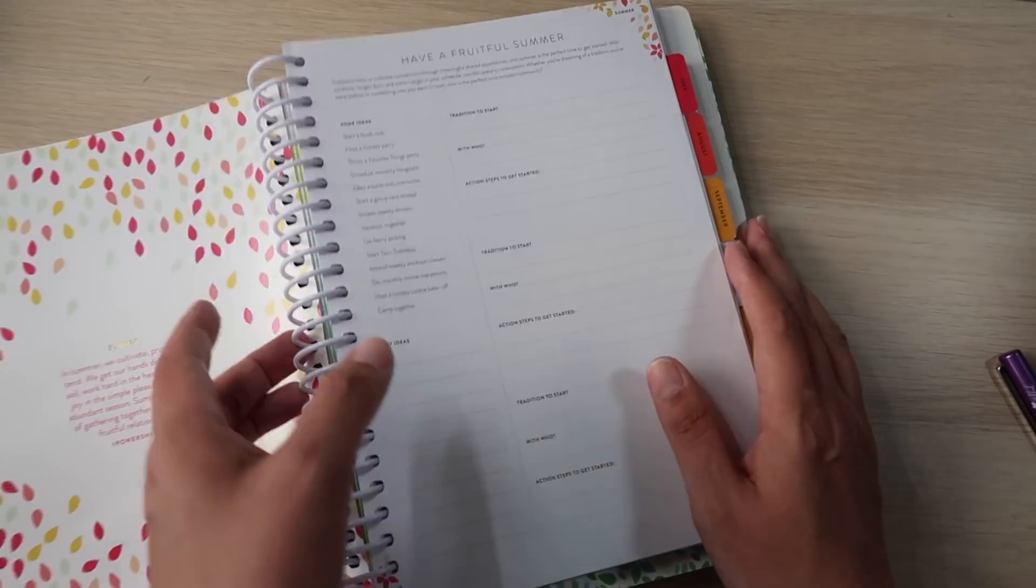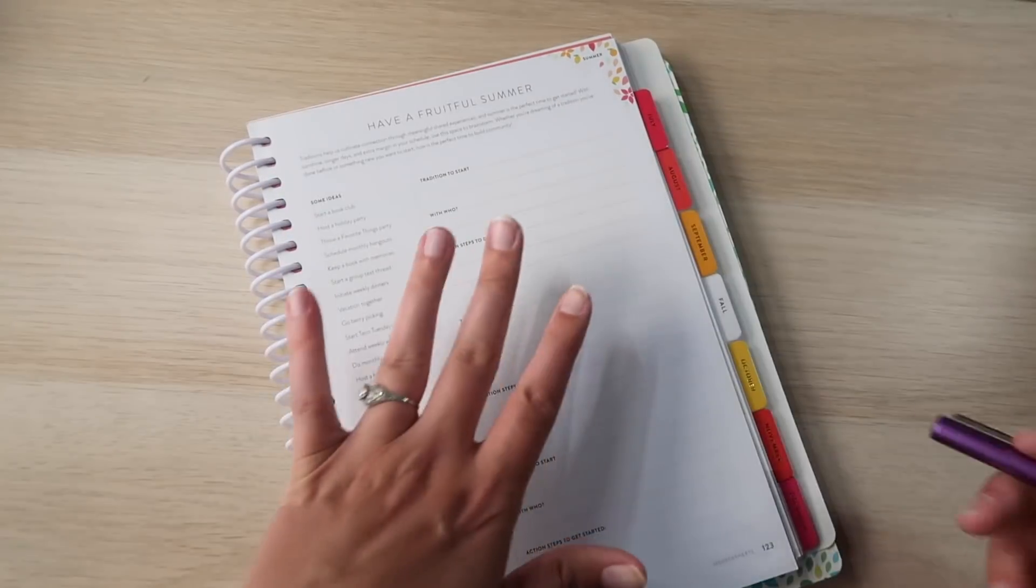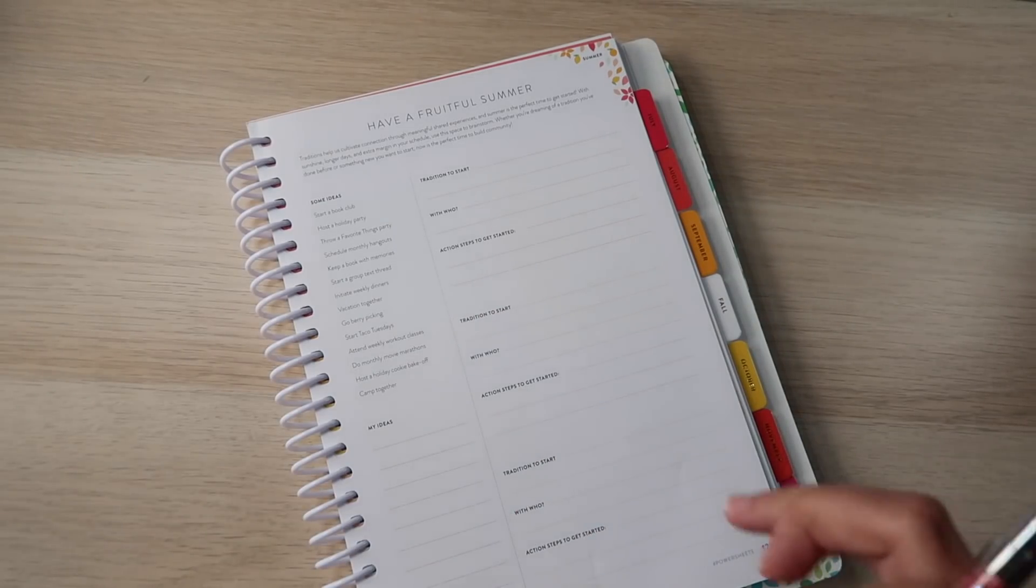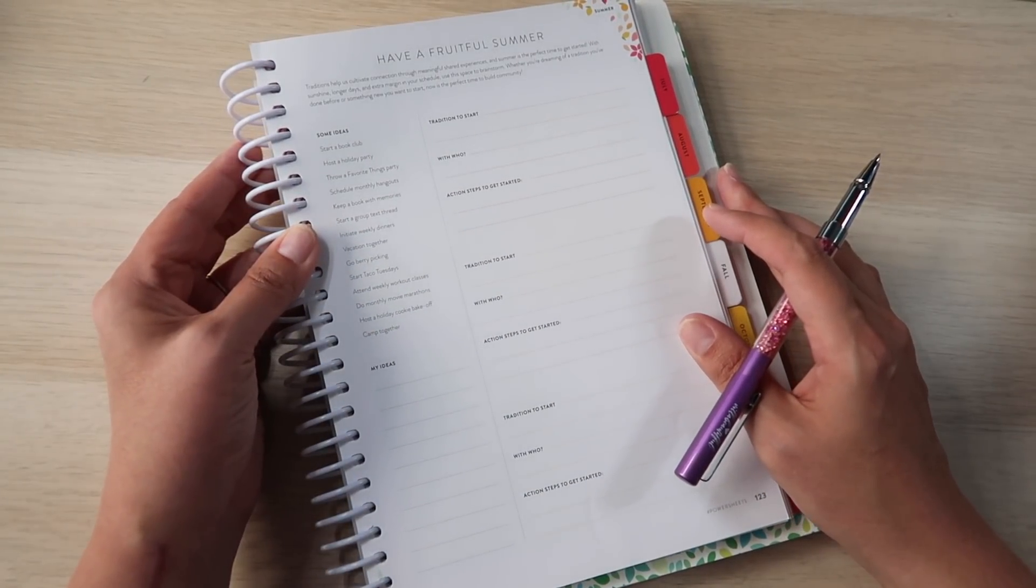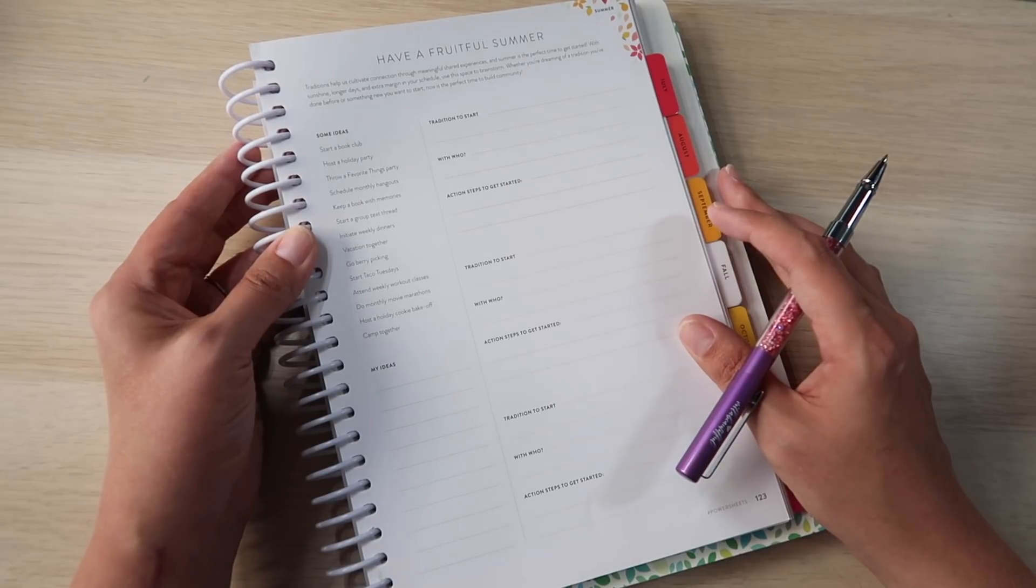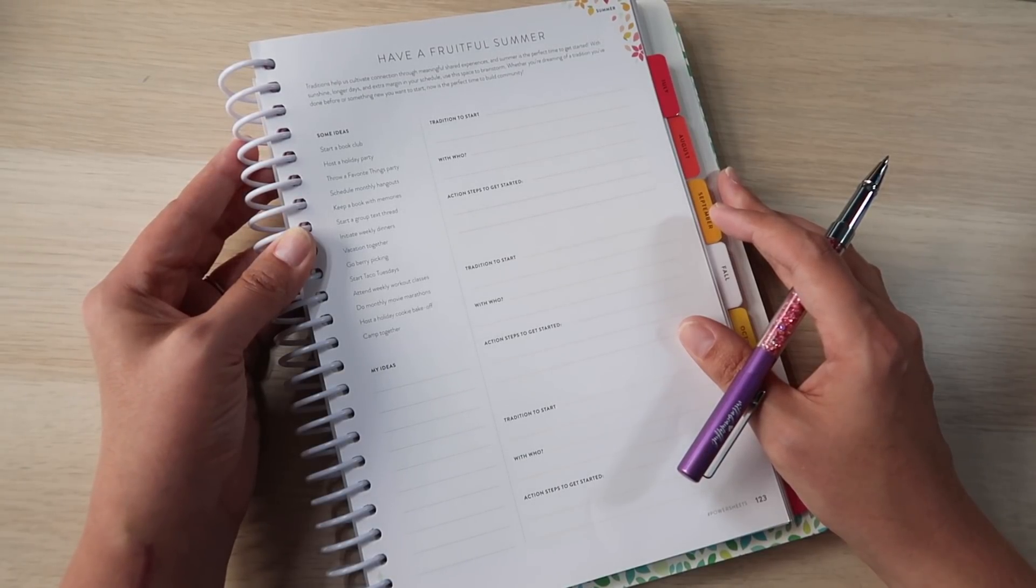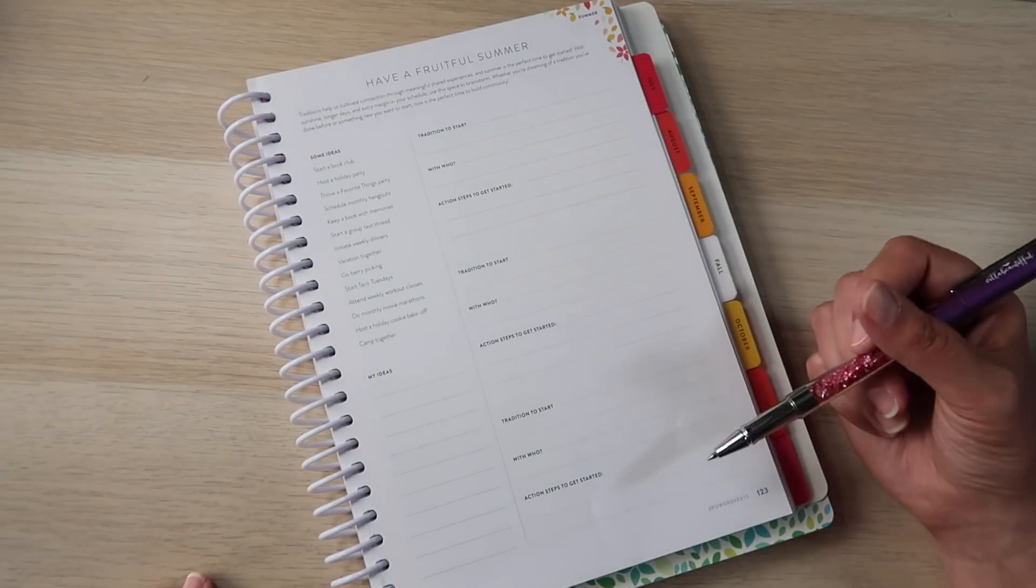Now it's time for the summer check-in. So the way the power sheets work is that there is a quarterly kind of check-in that's themed depending on what time of the year it is. And so for this summer, it is have a fruitful summer. Traditions help us cultivate connection through meaningful shared experiences. And summer is the perfect time to get started with sunshine, longer days, an extra margin in your schedule. What's that like? Use this space to brainstorm. Whether you're dreaming of a tradition you've done before or something new you want to start, now is the perfect time to build community. And then it gives you some ideas. And then there's spots for three traditions to start. Tradition to start with who, action steps to get started.